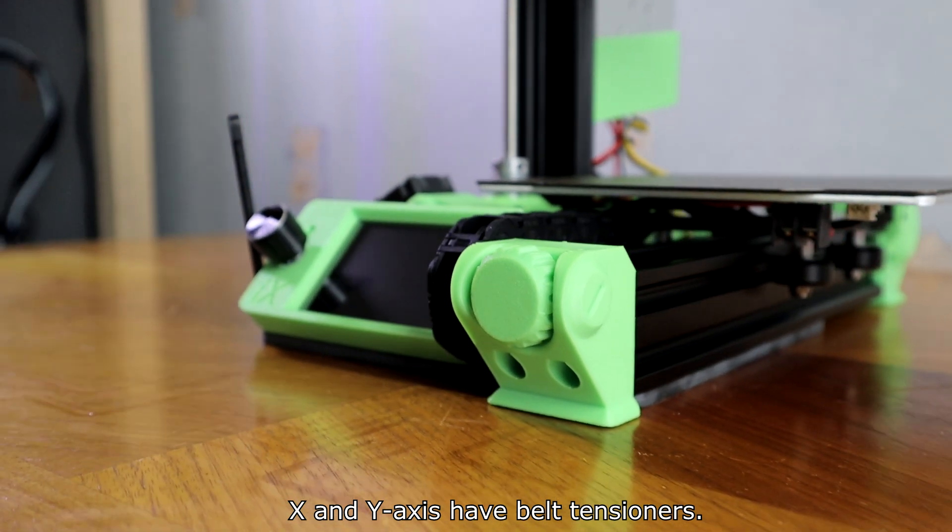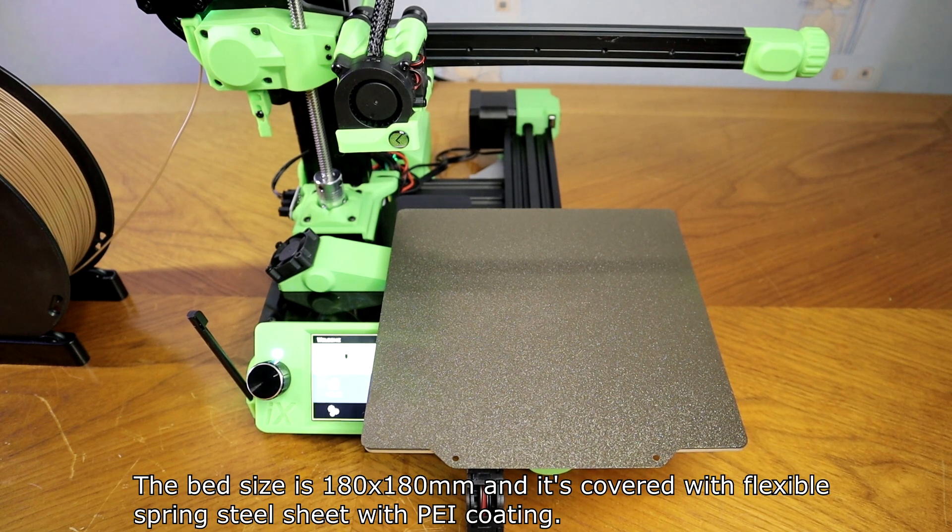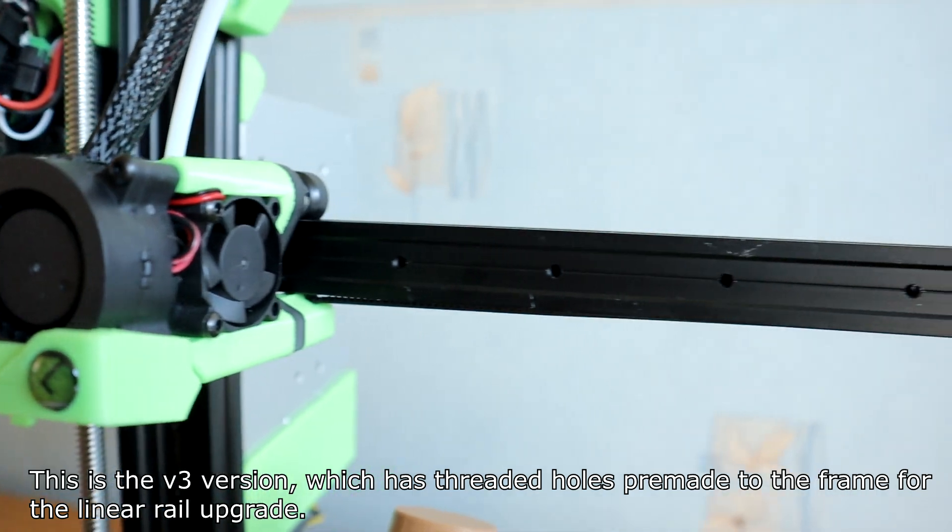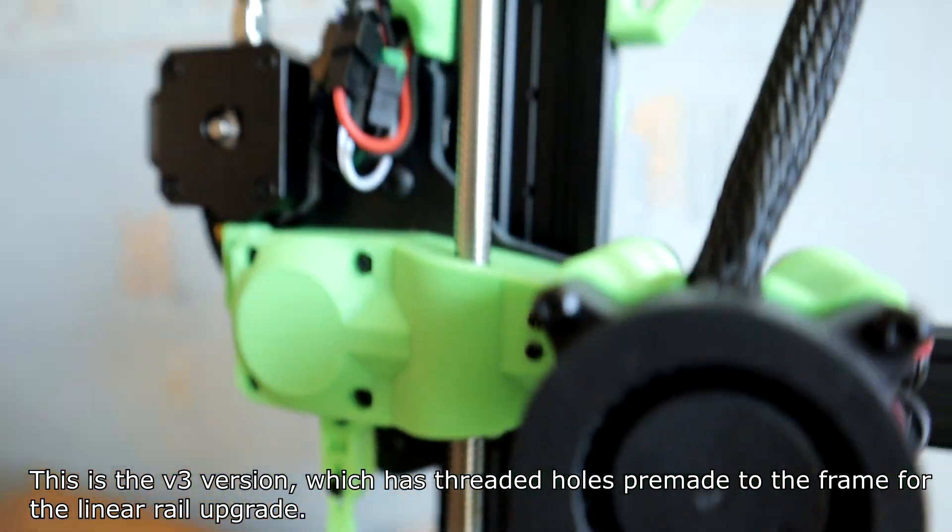X and Y axis are belt engineers. The bed size is 180 by 180 and it's covered with flexible spring steel sheet with PEI coating. This is the V3 version, which has 3D holes pre-made to the frame for the linear rail upgrade.